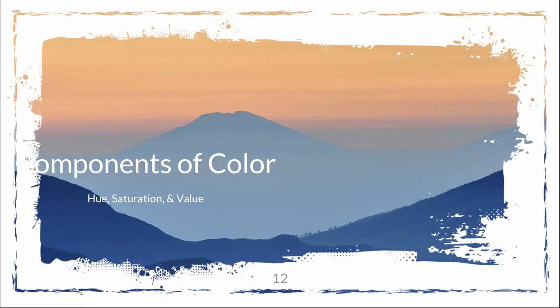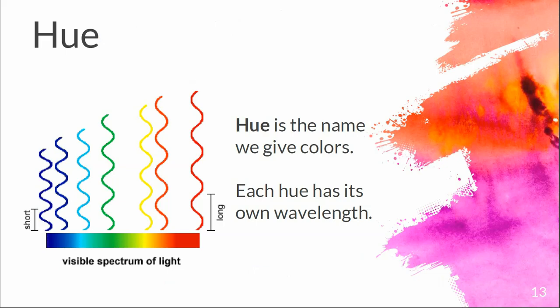Components of color: our three main components are hue, saturation, and value. Hue is the name we give our colors — each hue has its own wavelength. Theoretically, there are an infinite number of hues that exist because they can always be broken down and measured further. We just don't have the desire or capability to identify every single possible hue, similar to a big data problem where you've identified 70 billion specific colors but when making a map you just want a regular color template.